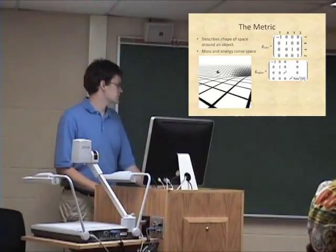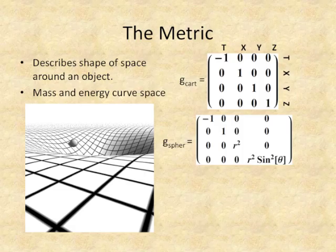One tool we can use to manipulate these four-vectors is the metric, normally denoted by G. The metric just describes the shape of space around an object. The Cartesian metric is pretty simple — it's just describing flat space with normal X, Y, and Z. But mass and energy can also curve space, which is why I put that picture at the bottom. Inside that depression there's the sun, and the earth orbits along the curves of space, which is where Einstein's general relativity theory of gravity comes from.